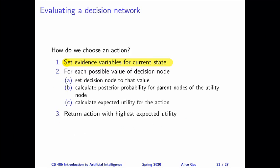Next, we'll think about all the possible decisions or actions we can take. For each possible value of a decision node, we set the decision node to that value — similar to how we set evidence variables. Then we look at the utility node. There is typically only one utility node, because this models the preference of one agent. We look at the parent nodes of the utility node and calculate their posterior probabilities.